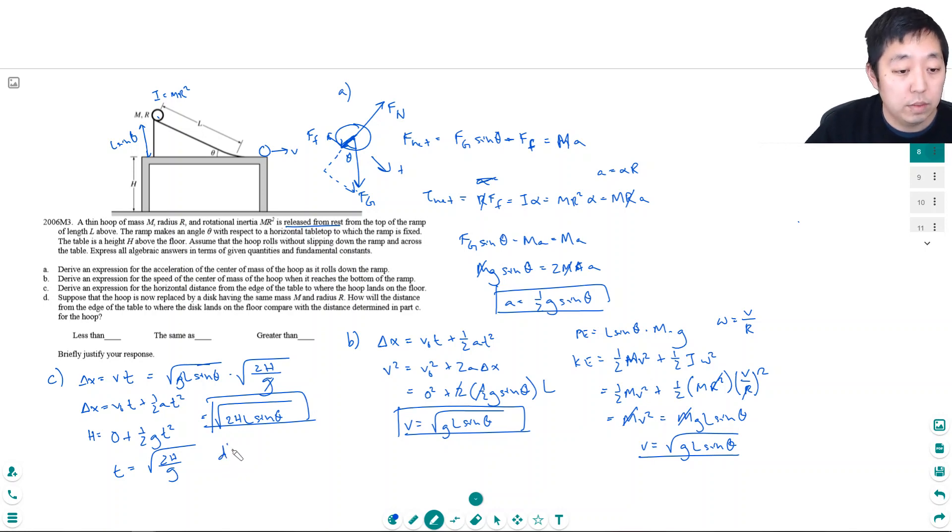Part D: suppose the hoop is replaced by a disc having the same mass m and radius r. How will the distance compare with the distance in part C? You would have to know how the rotational inertia changes.